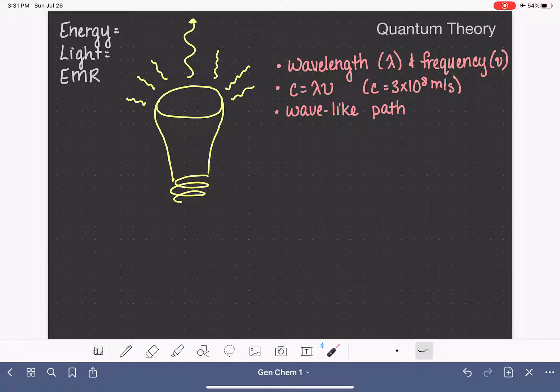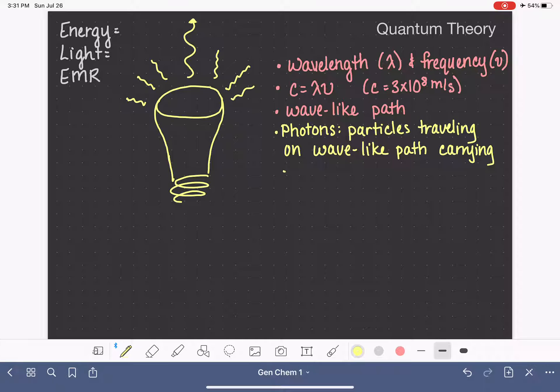Now, something that we haven't talked about yet is that this particular path, this wave-like path of energy coming out of this light bulb is actually made up of particles, actual objects that are called photons. So these photons are particles that are traveling on the wave-like path. And they are actually the objects that carry the energy. So these photons are traveling on these paths, this particle traveling on this path, carrying the energy that is being transmitted out of this light bulb and into whatever object you have in your house.